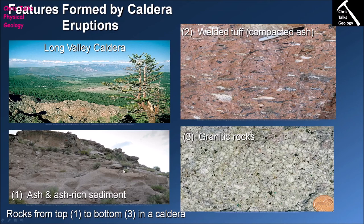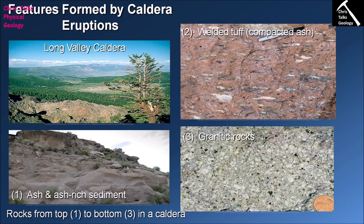Above the welded tuff is material that was not under sufficient pressure to become welded — these are ash-rich sedimentary rocks representing loosely compacted ash layers that are naturally very weak. Over time, once exposed to the atmosphere, this ash layer is actively eroded by water, air, or ice, creating ash-rich sediment that is redistributed within the crater.